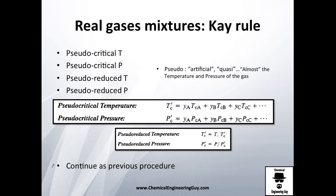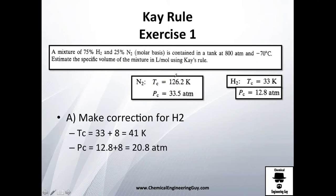Let's apply Kay's rule, which we saw in the last video, to this exercise. We have a mixture of 75% hydrogen gas and 25% nitrogen gas contained in a tank pressurized to 800 atmospheres at minus 70 degrees Celsius.